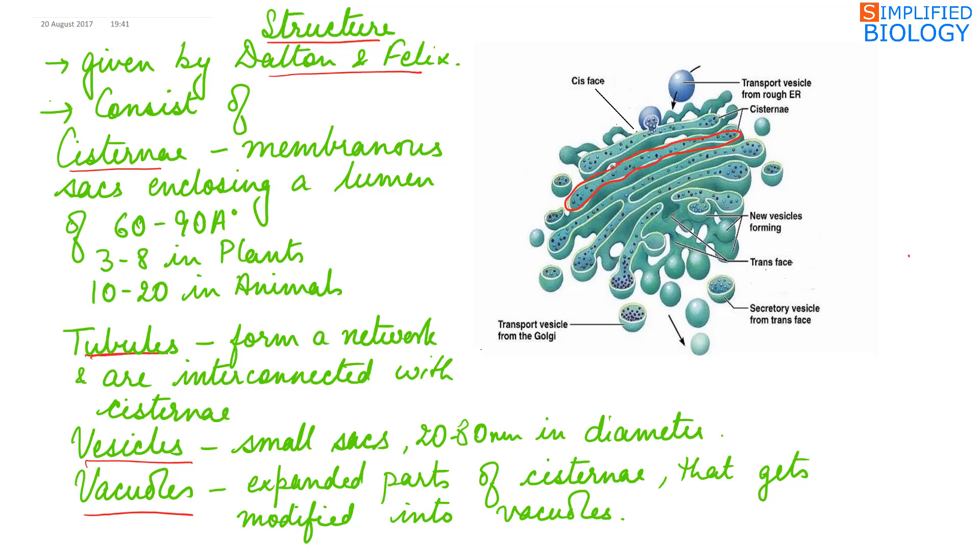Cisternae are membranous sacs enclosing a lumen or a cavity that is about 60 to 90 angstroms in diameter. The number of cisternae in plants is 3 to 8 while in animals it is 10 to 20.